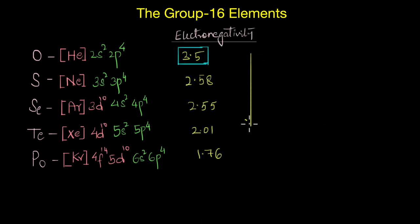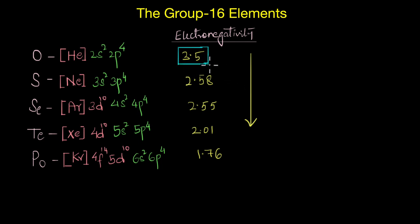The important thing to note here is that oxygen is one of the most electronegative elements — in fact, it is the second most electronegative element after fluorine. It can easily accept two electrons to attain stability.